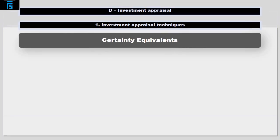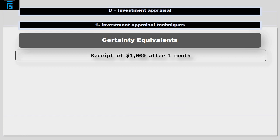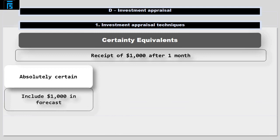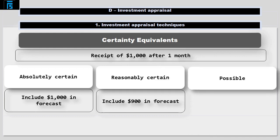Finally let's consider certainty equivalence. This is something we tend to do naturally. Consider the receipt of $1000 we may be receiving in a month's time. If you are absolutely certain it will arrive, we may include it in our forecast as $1000. If you are reasonably certain but not absolutely certain it will arrive, we might include it at say $900. If we think it could possibly arrive but we are not at all certain, we might include it at say $250.